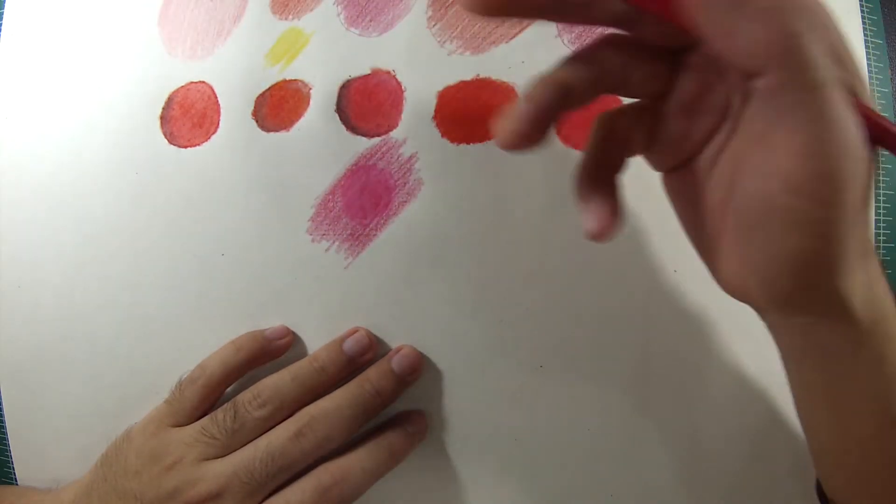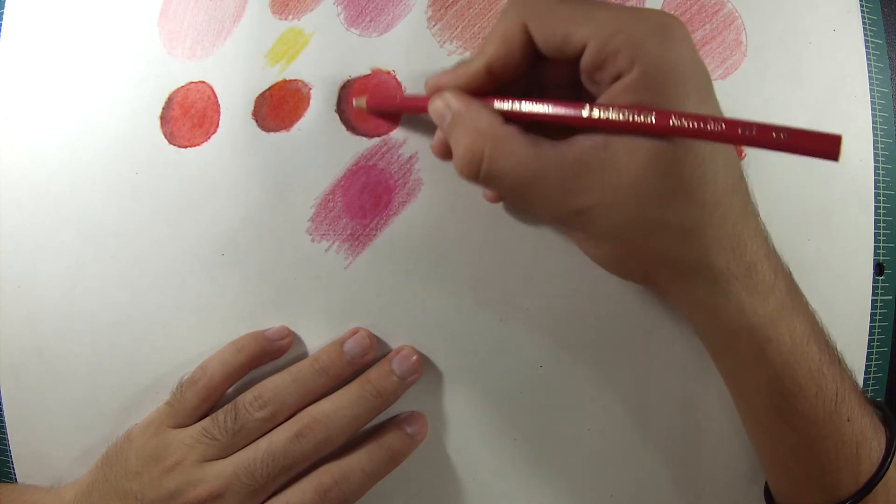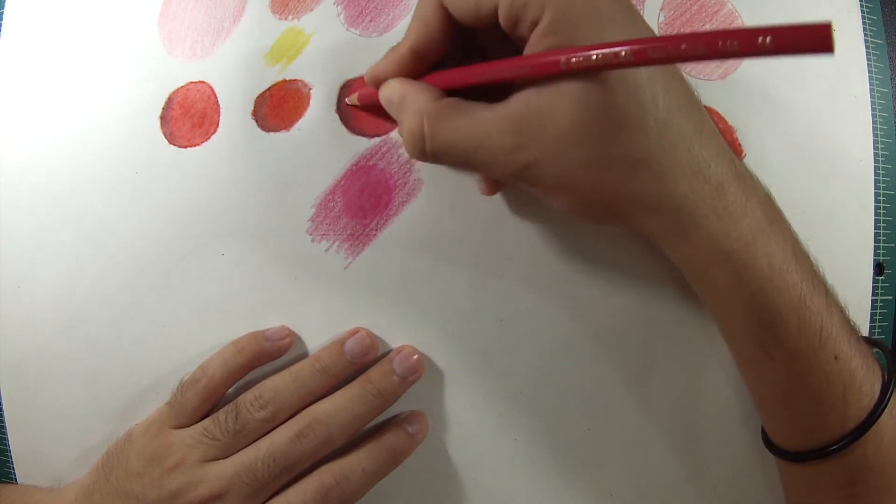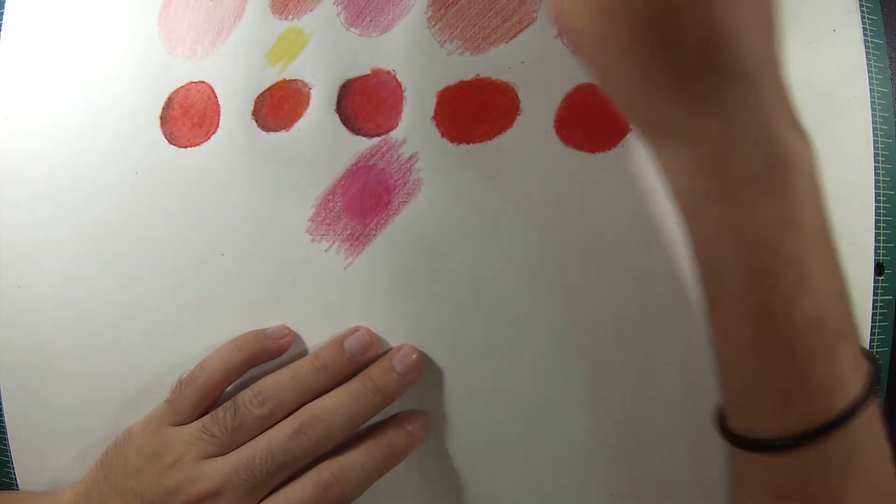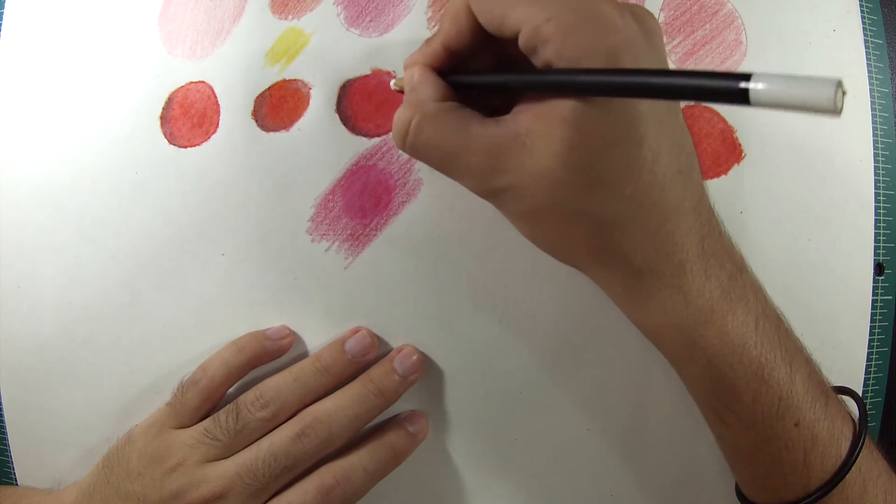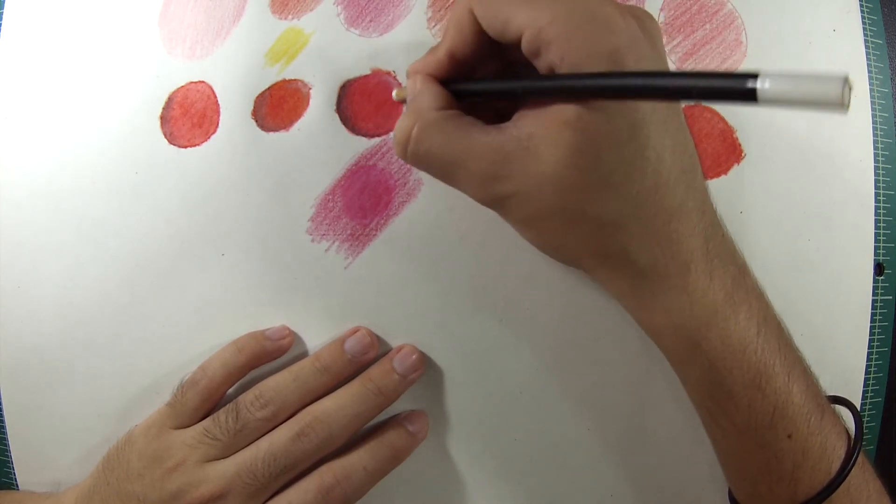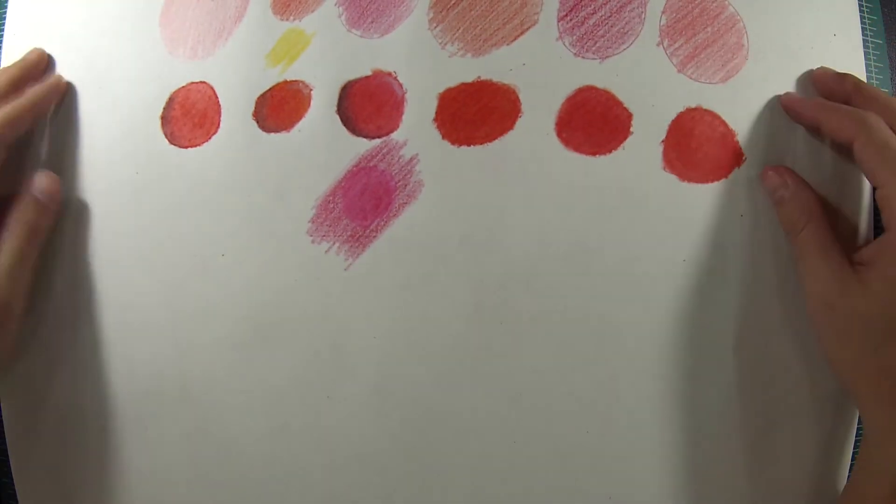To blend it in, just use the same color pencil and blend and color over the place you put the shadows. Now I'm gonna put some more highlights. And there you have it, circle with shadows and highlights.